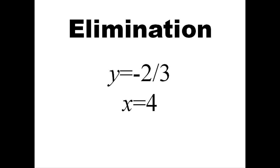Oftentimes, this solution is considered to be the intersection of two lines. In this case, the point of intersection is 4, negative 2 thirds.